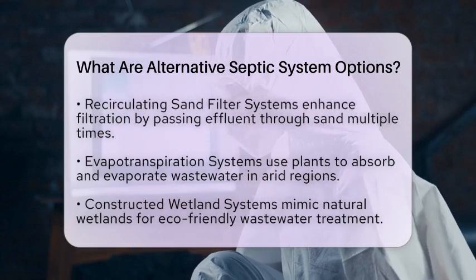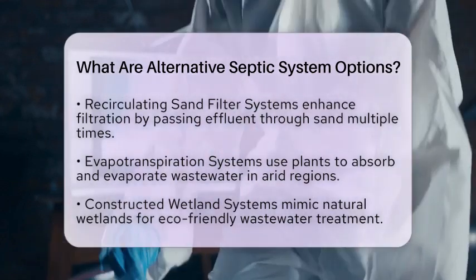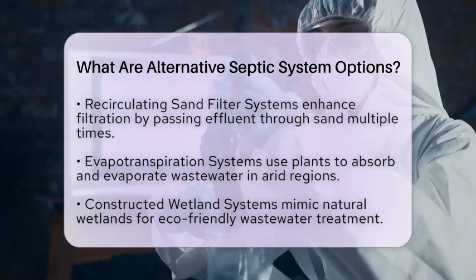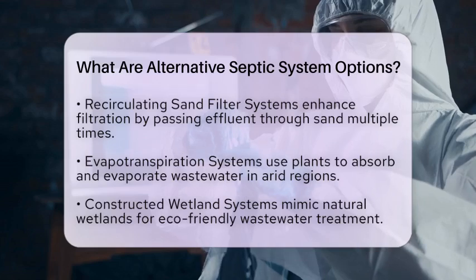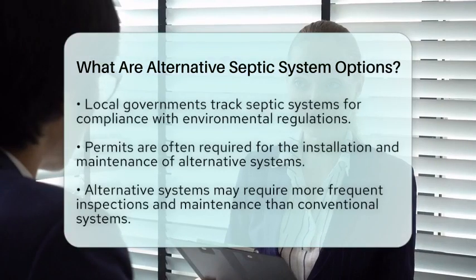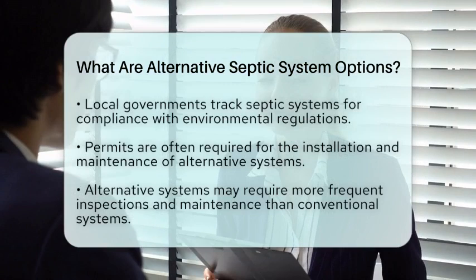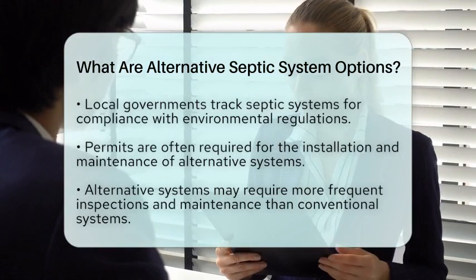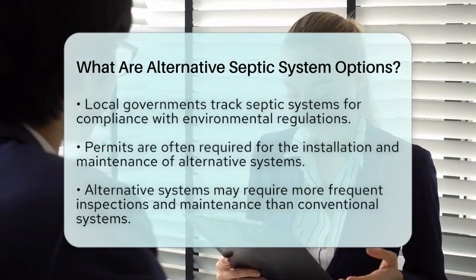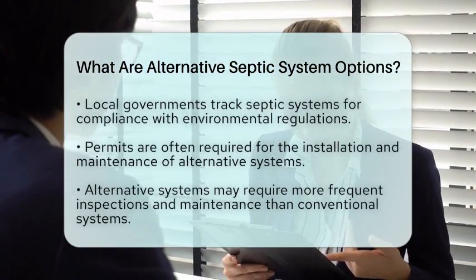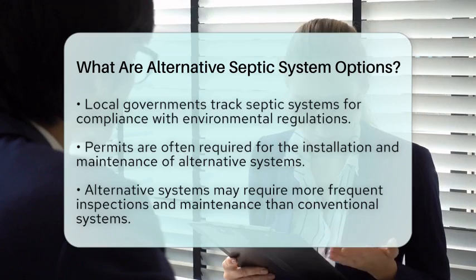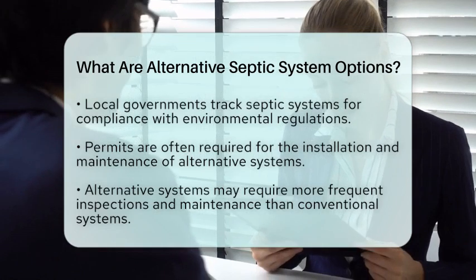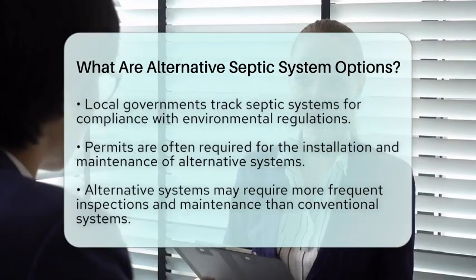When it comes to local government records, understanding these alternative systems is vital. Property owners and local authorities need to keep track of septic systems, including their types and maintenance history. This information is essential for complying with environmental regulations and for property transactions. Local governments often require permits for installing and maintaining these systems, ensuring they meet health and safety standards.